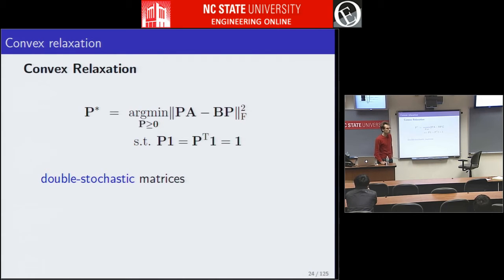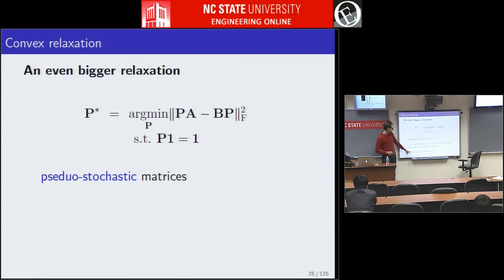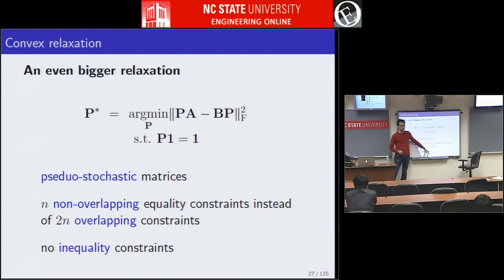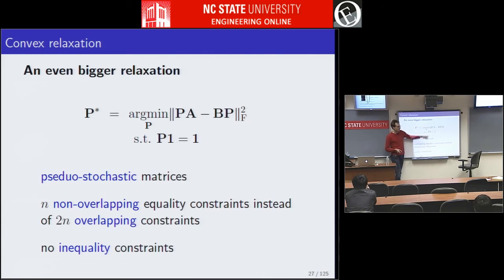I would like to consider a more relaxed, wider version of the convex relaxation and try to convince you that it still works well. Instead of doubly stochastic matrices — which require non-negative entries, rows sum to one, columns sum to one — I will drop the non-negativity constraints and the column sum constraints. I will call these pseudo-stochastic matrices. The structure changes significantly: without overlapping constraints and without non-negativity, the constraints decouple, allowing optimization in groups of variables and potentially more efficient algorithms.